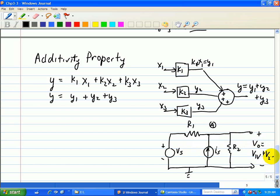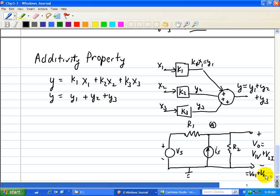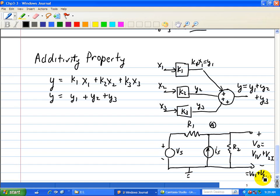Or I can relabel this as VO1 plus VO2. VO1 is due to the voltage source, VO2 is due to the current source.